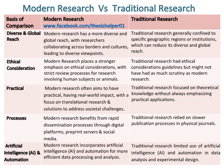Modern research benefits from rapid dissemination processes through digital platforms, preprint servers, and social media. Whereas traditional research relied on slower publication processes in physical journals.